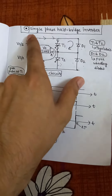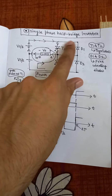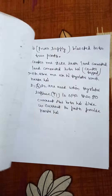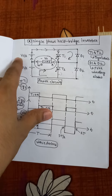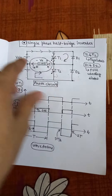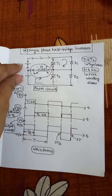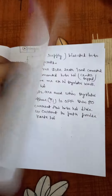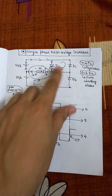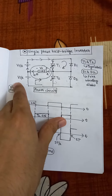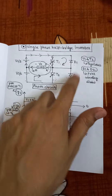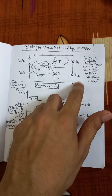Hello friends. Here we quickly discuss the basic working of a single-phase half-bridge inverter. In a single-phase half-bridge inverter, we apply DC source voltage Vs across the thyristors. This DC source voltage Vs is divided into two equal parts, Vs/2 and Vs/2. The first Vs/2 is applied to thyristor T1 and the second Vs/2 is applied to thyristor T2, and we have parallel freewheeling diodes D1 and D2.